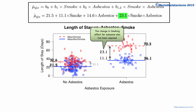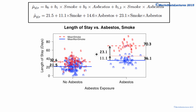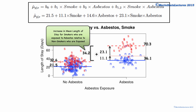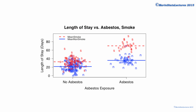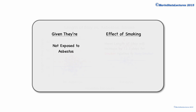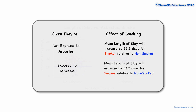And the 23.1 is the change in the smoking effect for someone who has been exposed to asbestos. So for someone who has been exposed to asbestos, the smoking effect is 11.1 plus 23.1, which is 34.2. For individuals who have been exposed to asbestos, we expect the smoker to have an increase in the mean length of stay of 34.2 days relative to non-smokers. To state that again: for those who are not exposed to asbestos, we expect the mean length of stay to increase by 11.1 days for a smoker relative to a non-smoker. And for those who have been exposed to asbestos, we expect the mean length of stay to increase by 34.2 days for a smoker relative to a non-smoker. The effect of smoking on the length of stay is much larger for those who have been exposed to asbestos than those who have not.